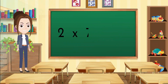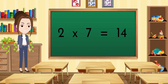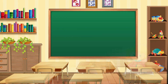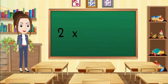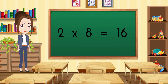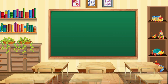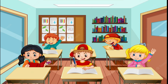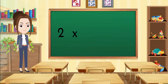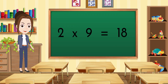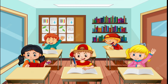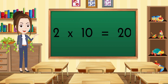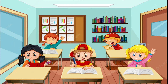Two sevens are fourteen. Two eights are sixteen. Two nines are eighteen. Two tens are twenty.